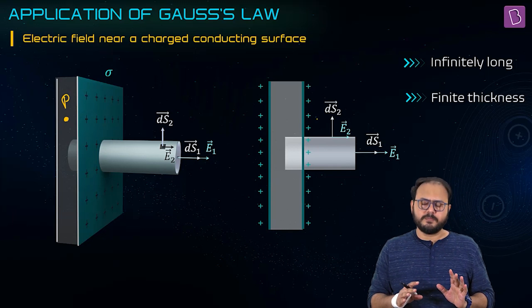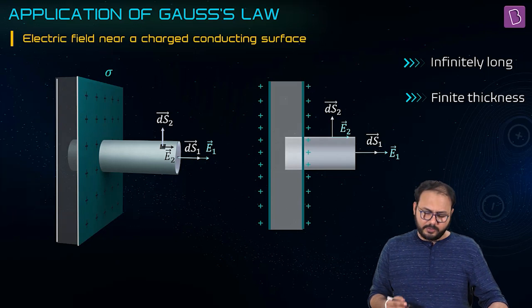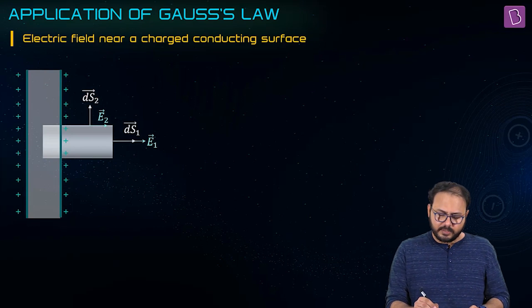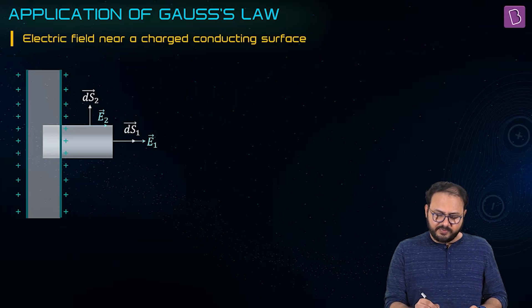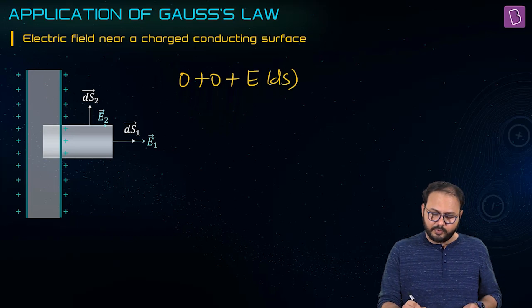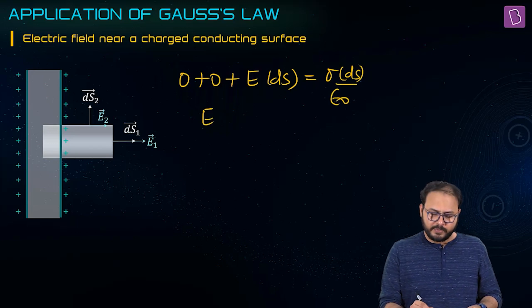So far it's fine. If I solve it now: three surfaces give zero plus zero plus E ds, and it was coming out to be sigma ds by ε₀. So E is equal to sigma by ε₀ n̂.